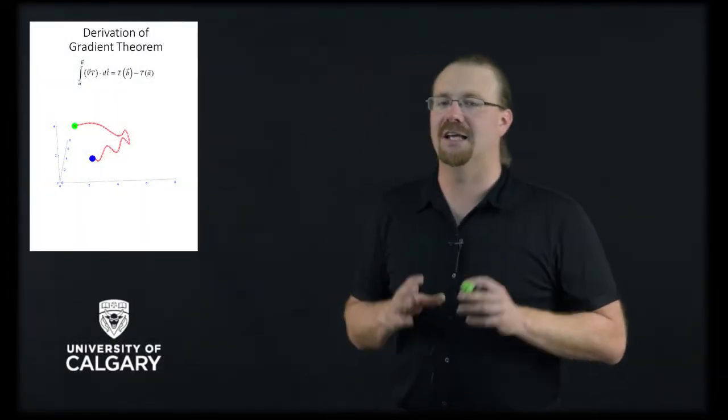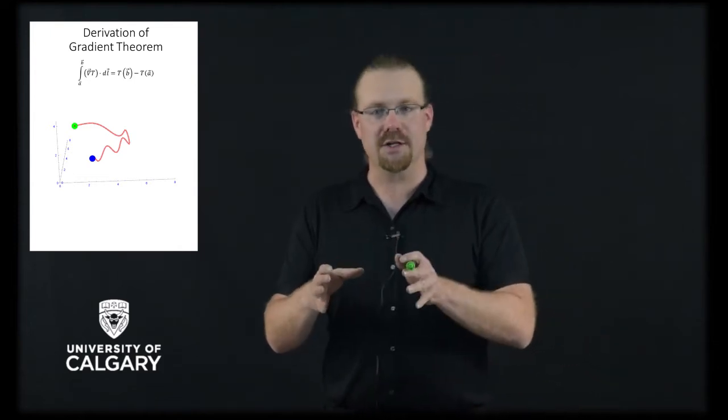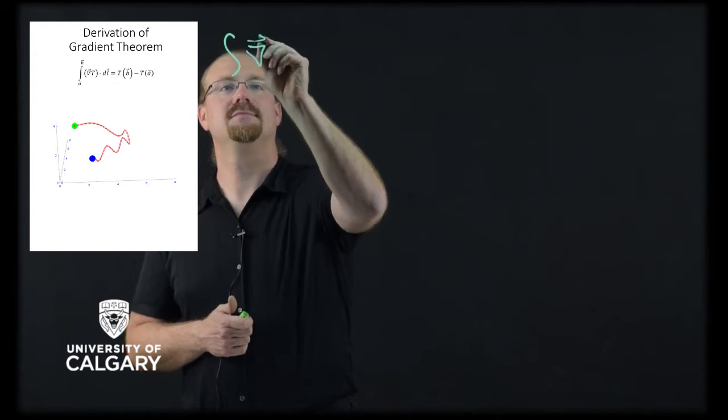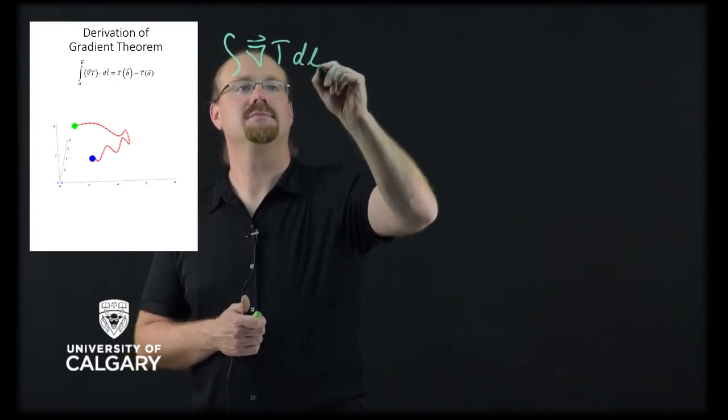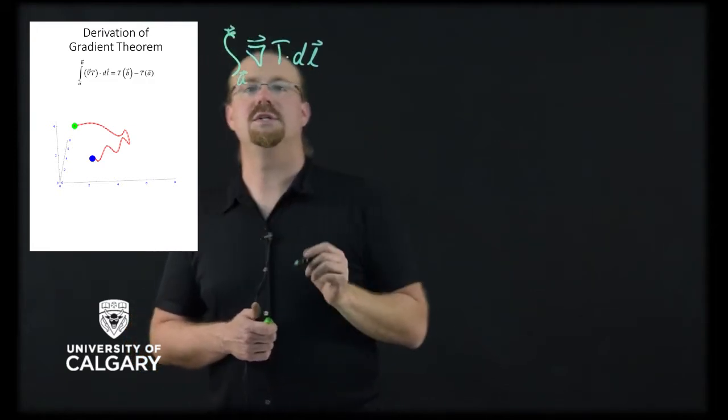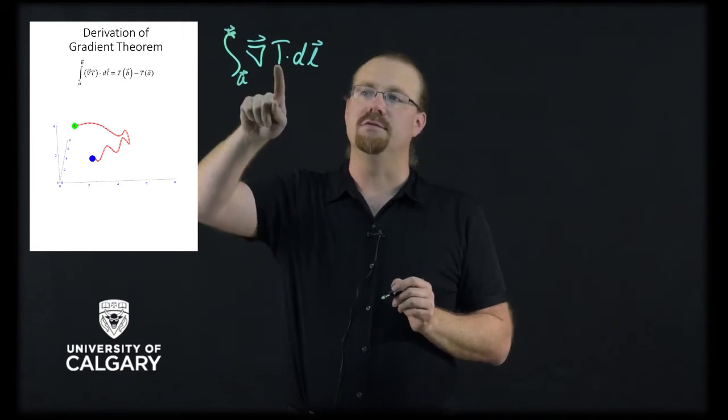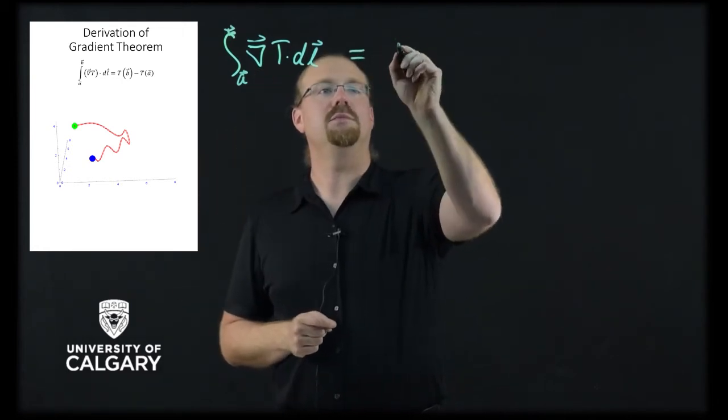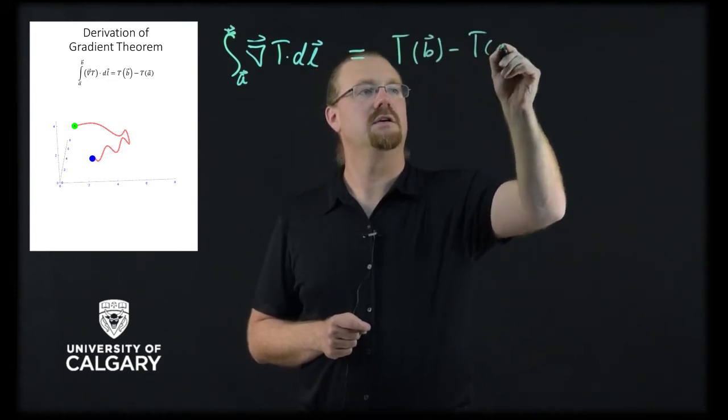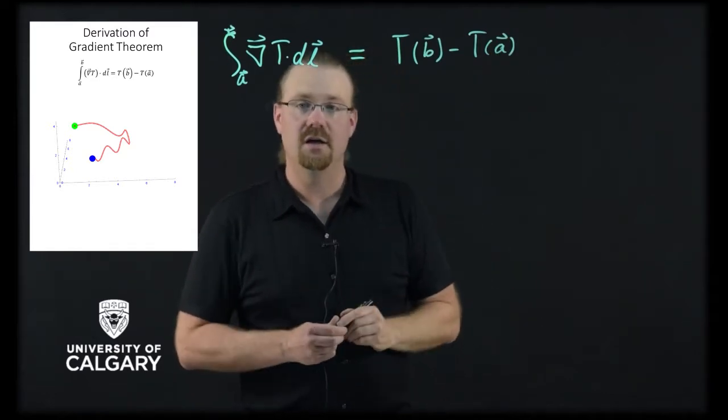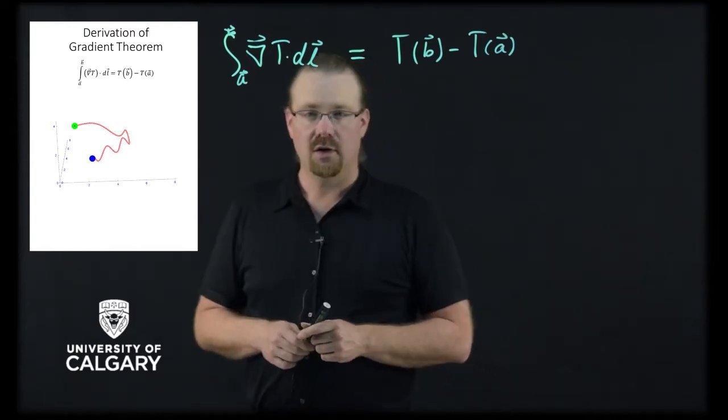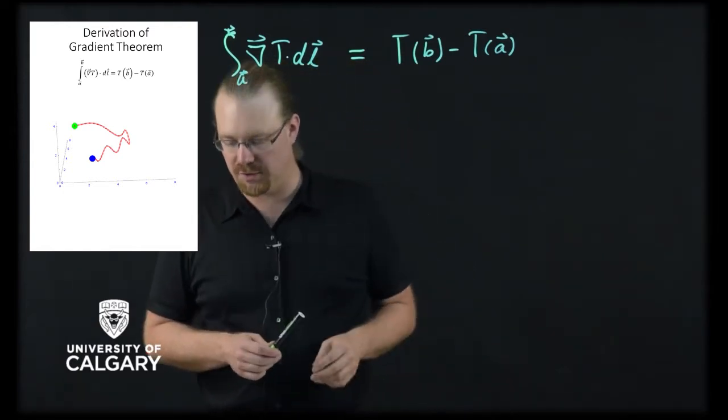The fundamental theorem of gradients allows us to take the integral of a gradient quickly. So we take the integral from a to b of the gradient of T dot dl, which is simply T of b minus T of a. This video will prove this identity, or at least it will hint at a proof in some different coordinate systems.